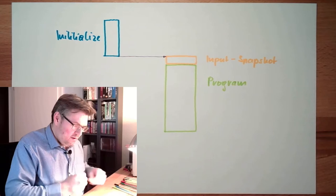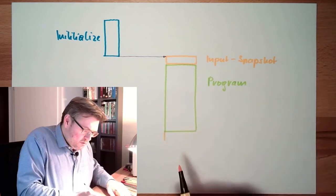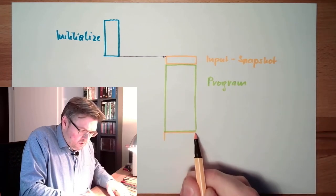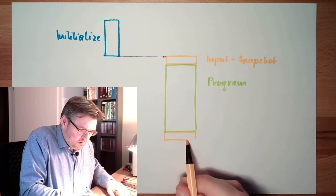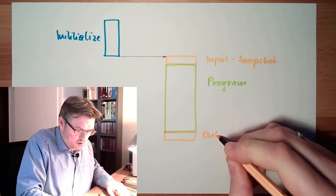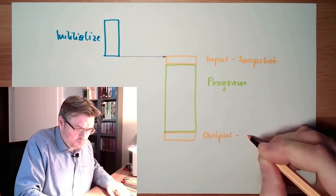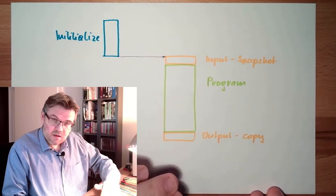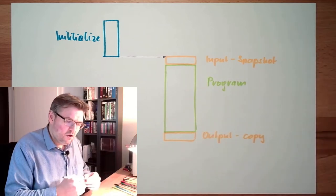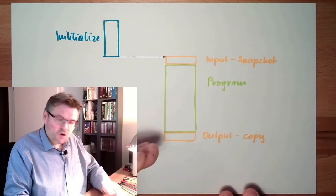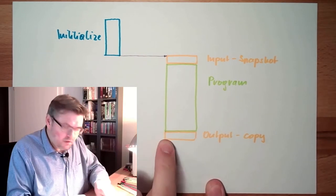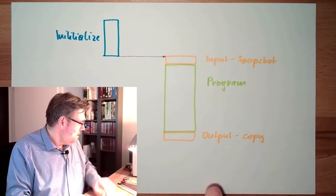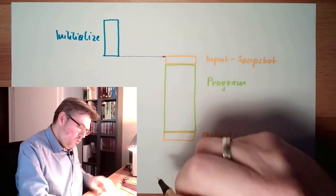And then all the stuff is written into the output snapshot. And now we make the output copy and copy whatever the program decided should appear on the output, copy to the real output. Now the values appear at the output, and after this is done we start over.